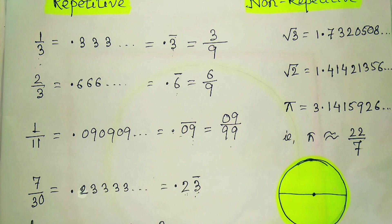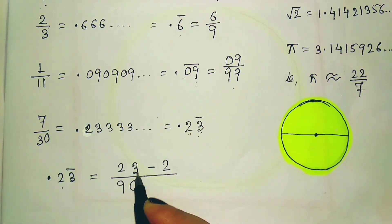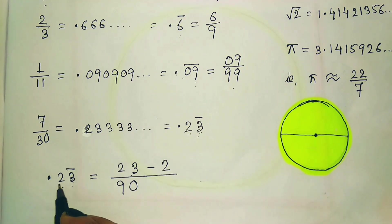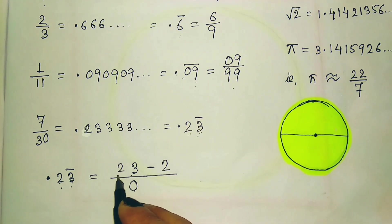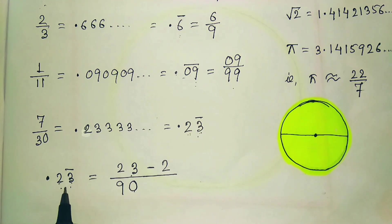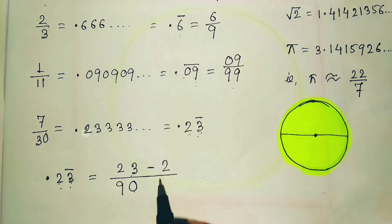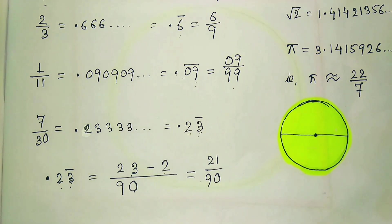To convert 7/30 to fractional form: write the full number 23, subtract the non-bar part (which is 2), giving 23 − 2 = 21 in the numerator. The denominator has one 9 (for the bar digit) and one 0 (for the non-bar digit), giving 90. So 21/90 simplifies to 7/30.